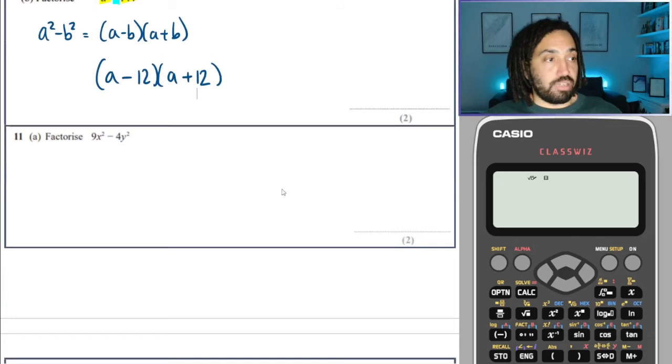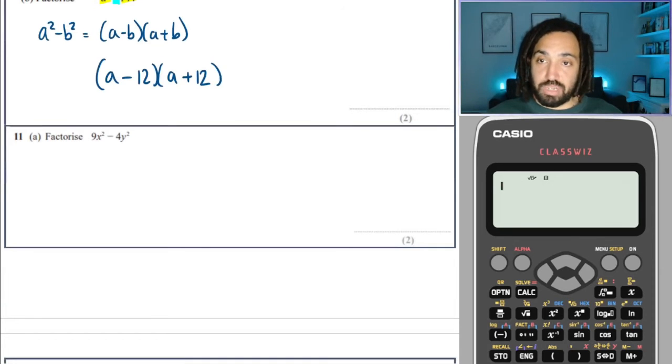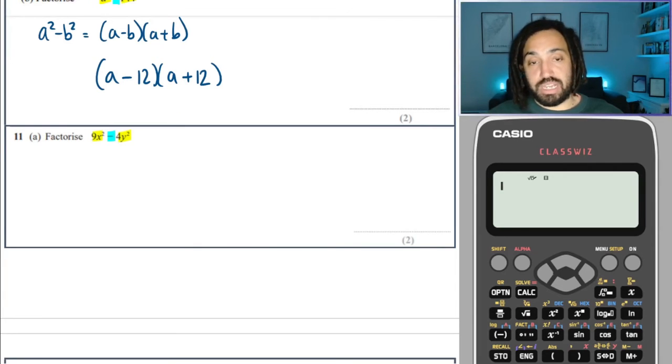Okay. Same one here. Another difference of two squares, because that is a difference. And we have a square and another square, because 9 is square, 4 is square, x squared is square, and y squared is square.